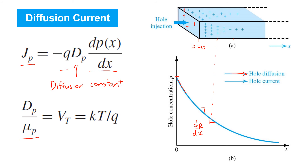The diffusion constant is related to the mobility of holes in the semiconductor material by a simple expression. They're related by a voltage Vt called the thermal voltage, which is about 25 millivolts at room temperature.